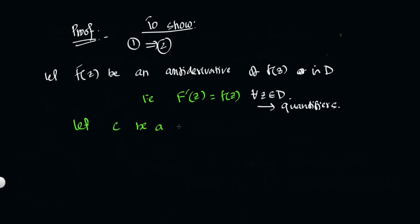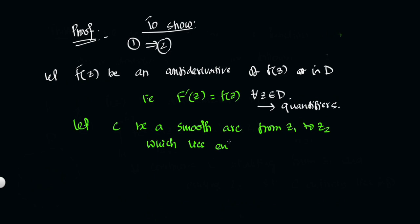Let C be a smooth arc from z1 to z2 lying entirely in D. We want to show Statement 2: the integral from z1 to z2 of f(z) dz equals F(z2) minus F(z1). In parametric form, suppose C is parameterized by z(t) for t lying between a and b, where z(a) = z1 and z(b) = z2.